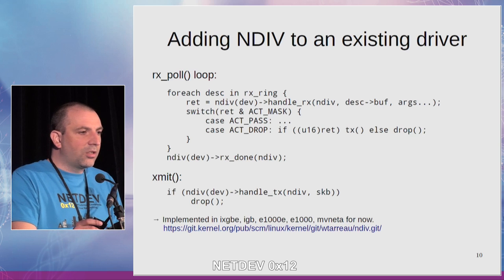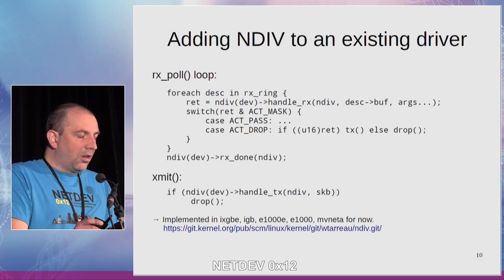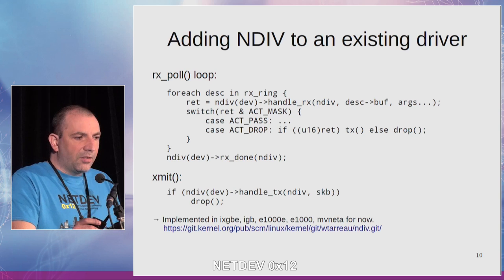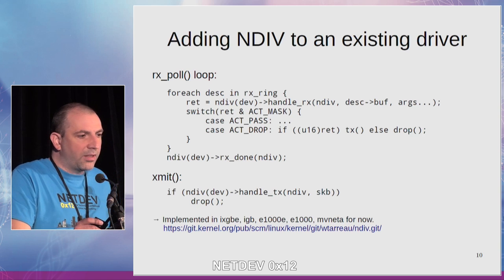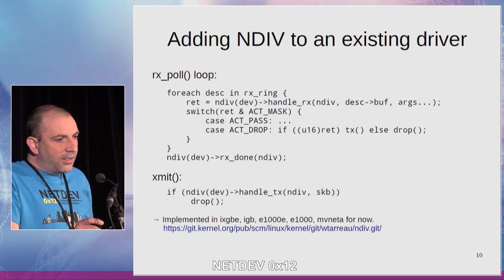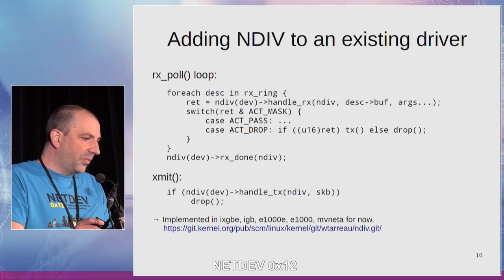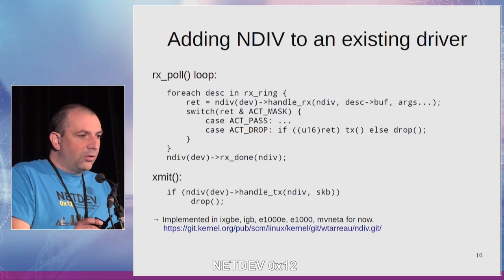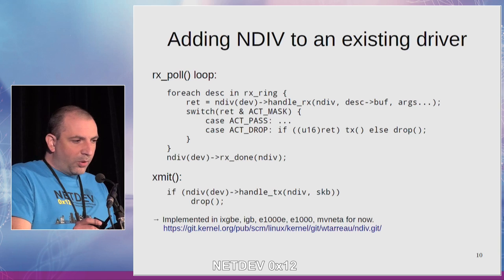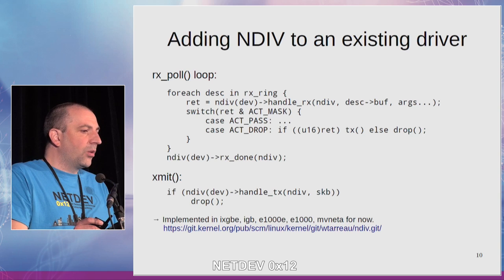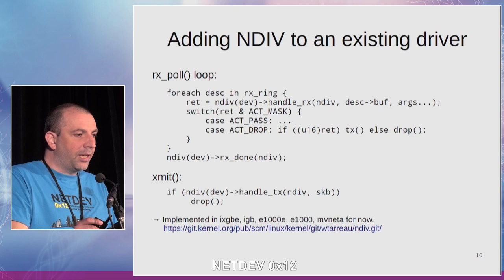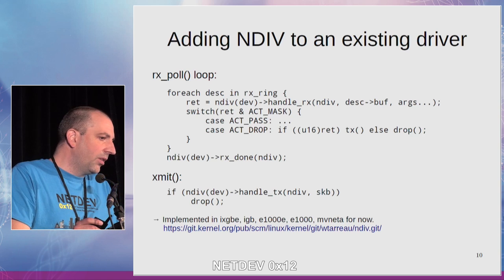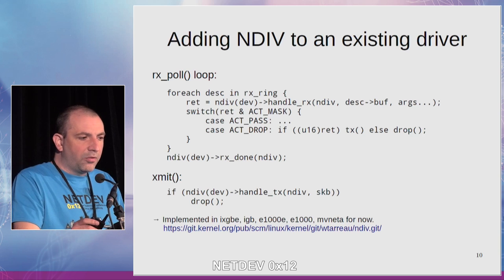So what does NDEV look like on the driver side? In the RxPoll loop, for each descriptor of the Rx ring, we call handleRx and the driver has to handle the return action to pass or drop the packet. If handleRx returns a length, it means there is a response available in the outgoing buffer and the driver has to send this packet into the Tx ring. At the end of the RxPoll loop, we added a callback, RxDone — this is the callback called per packet batch for the I/O operations. And on the XMIT path, we simply add a callback on TX, called directly with the SKB to perform analysis of the outgoing packets.